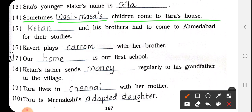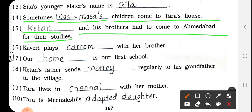Next, number 5: Dash and his brothers had to come to Ahmedabad for their study. तो केतन और उसके भाई Ahmedabad study के लिए आए थे. Answer: Ketan — K-E-T-A-N.